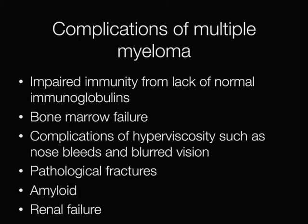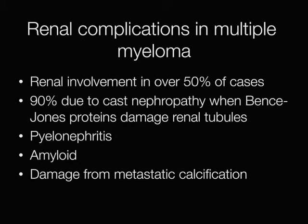Because renal failure occurs in approximately 50% of patients with myeloma, it is worth examining in more detail. It is the Bence-Jones proteins that cause the major renal complications. The proteins damage the renal tubules, which is referred to as cast nephropathy. Other complications include pyelonephritis, amyloid, and metastatic calcification resulting in renal damage.